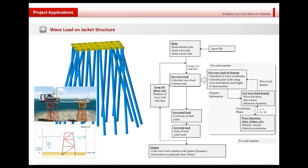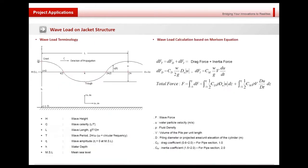In this structure, how to make the wave load? This is the procedure how the program will determine the wave load based on input values such as the elements, wave load information, and the current information. The value of the wave load is going to be calculated and will be applied as the nodal load. Both dynamic and static loads can be considered.